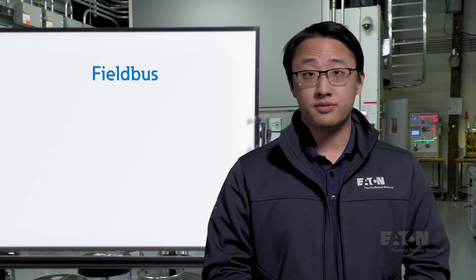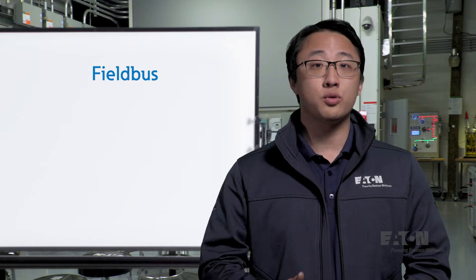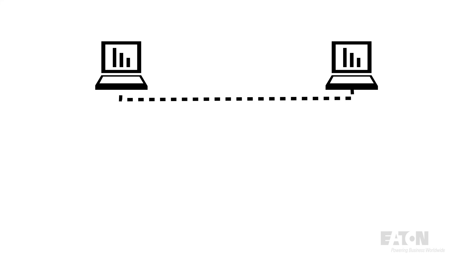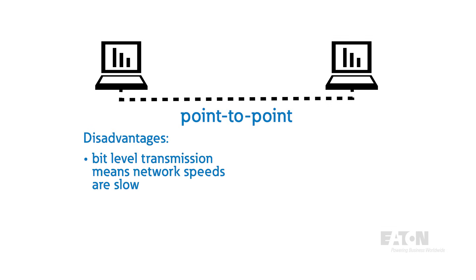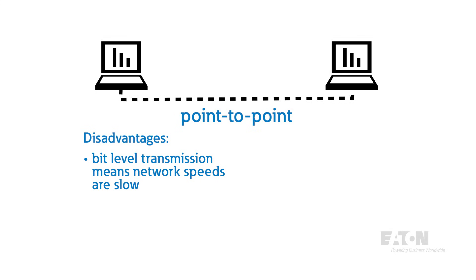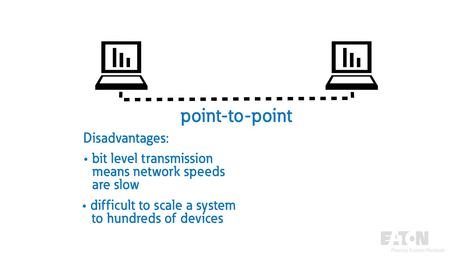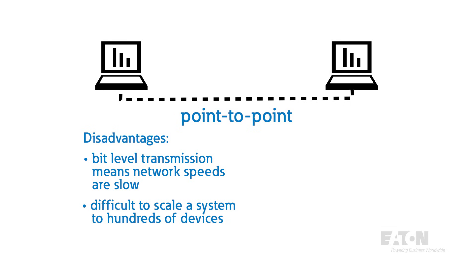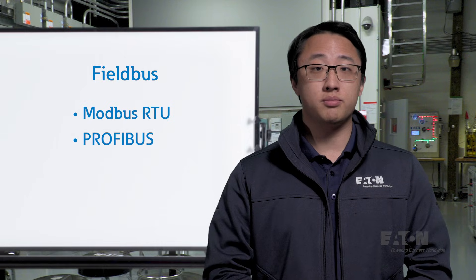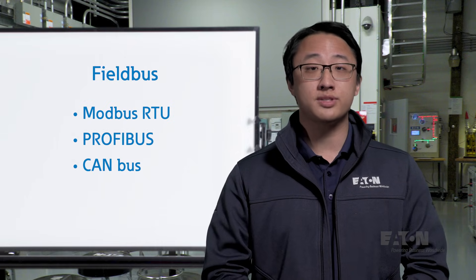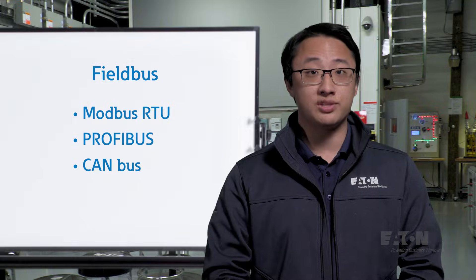The disadvantages are that Fieldbus communications are mainly suited for wiring between two devices directly, known as point-to-point application, and the bit-level transmission makes overall network speeds relatively slow. Both reasons make it difficult to scale a system to hundreds of devices, but most legacy systems still use Fieldbus since it's cost-effective and easy to set up and maintain. Modbus RTU, PROFIBUS, and CANBUS are three protocols that make use of Fieldbus twisted pair connections.